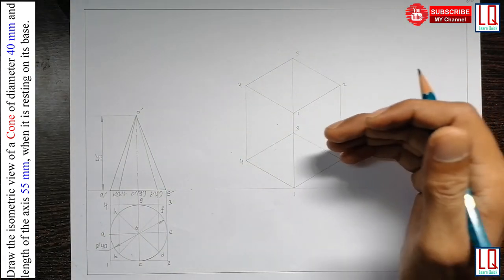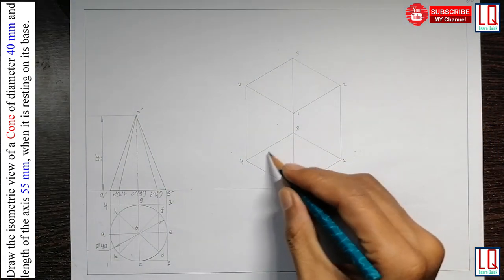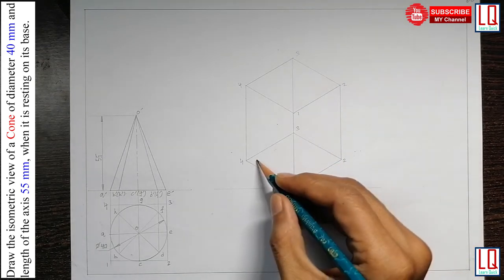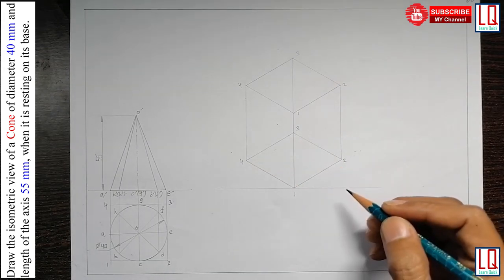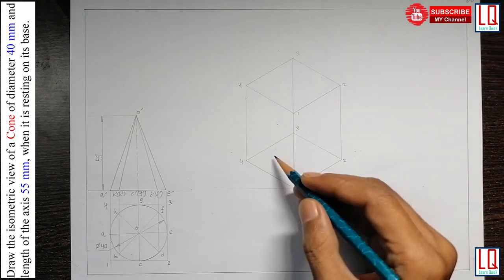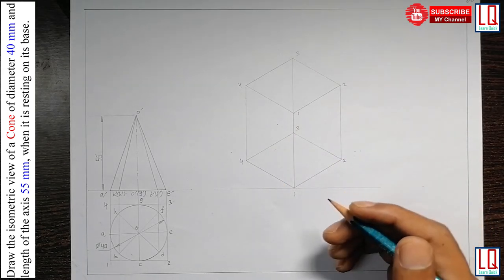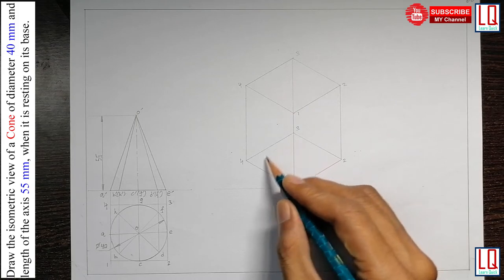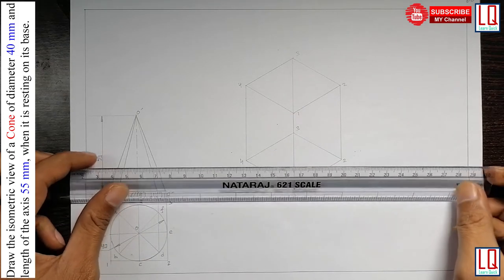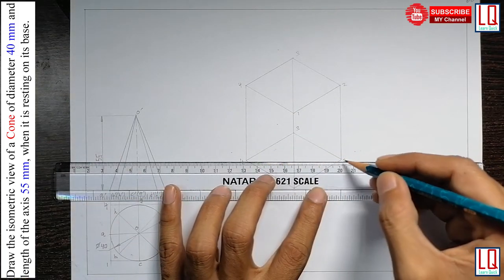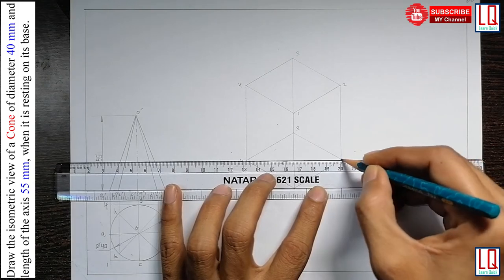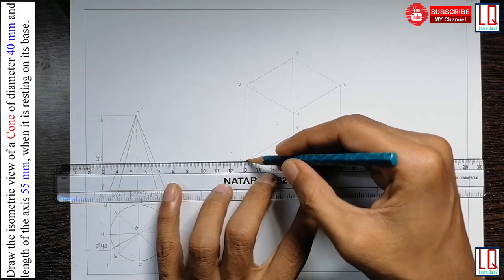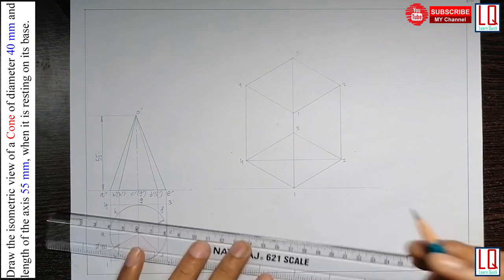Now, in this isometric projection of this cone, in the base plane, only the front half of the circle will be visible whereas the circle which is in the rear end will not be visible. So, first we will connect the far corners. The 2 and 4 are the far corners. We connect with a line.